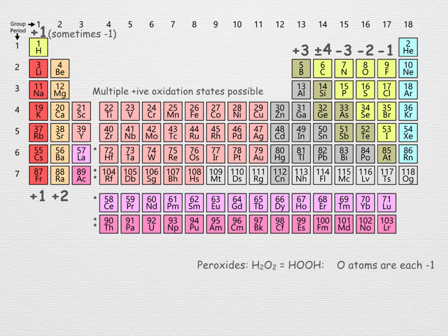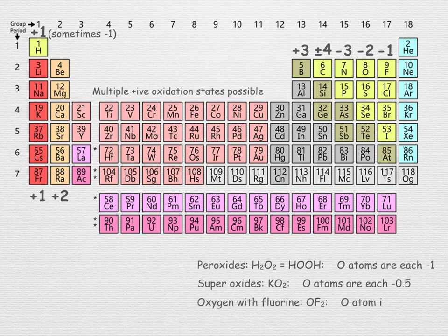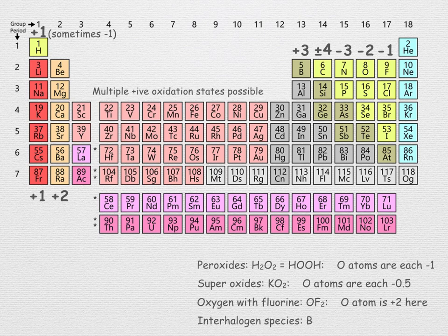Here are some special yet important cases for you to remember. Peroxides, molecules with two oxygen atoms bound together, each atom has an oxidation state of minus one. Superoxides, molecules such as KO2, have an oxidation number of minus one half assigned to each oxygen atom. Oxygen has a negative oxidation number, except when bound in a molecule to fluorine, then it becomes positive as F has the largest electronegativity. In interhalogen compounds, the halogen lower in the group carries a positive oxidation number.